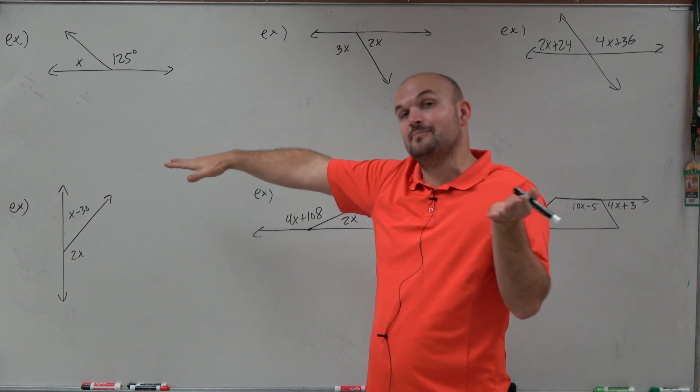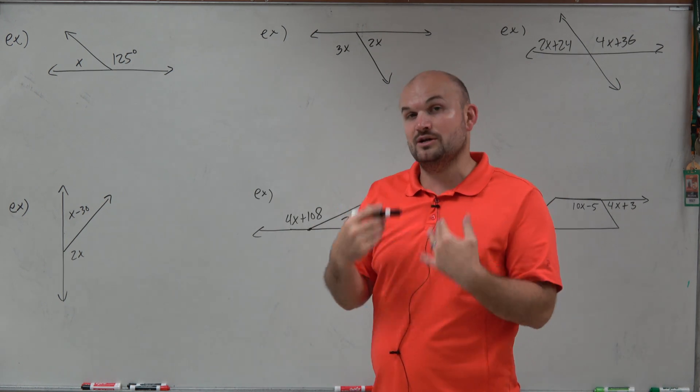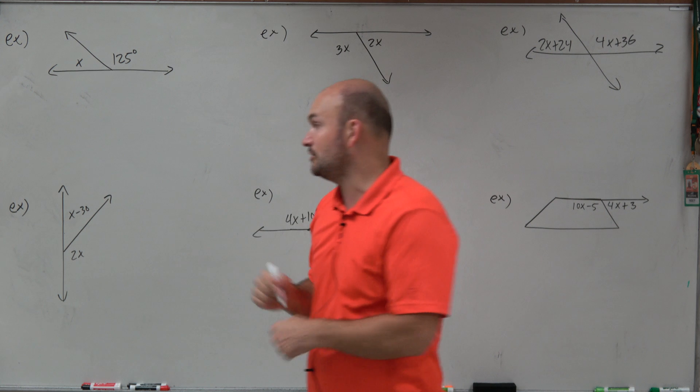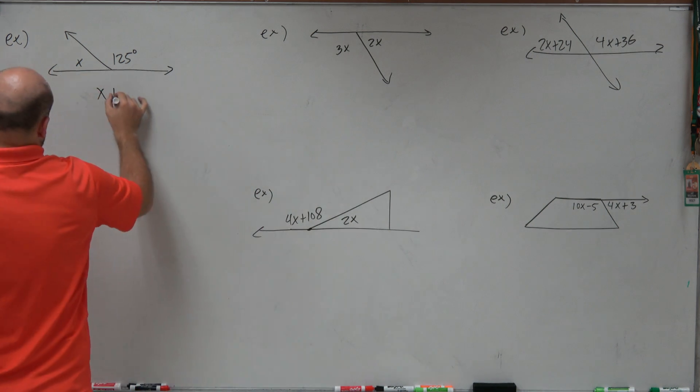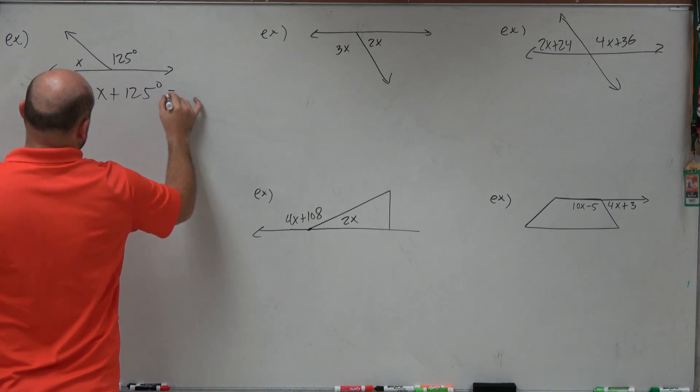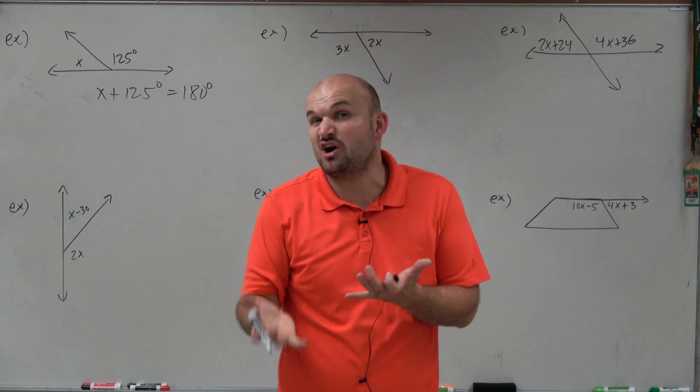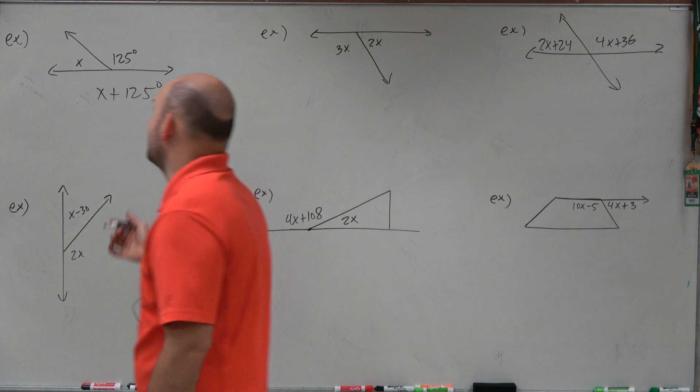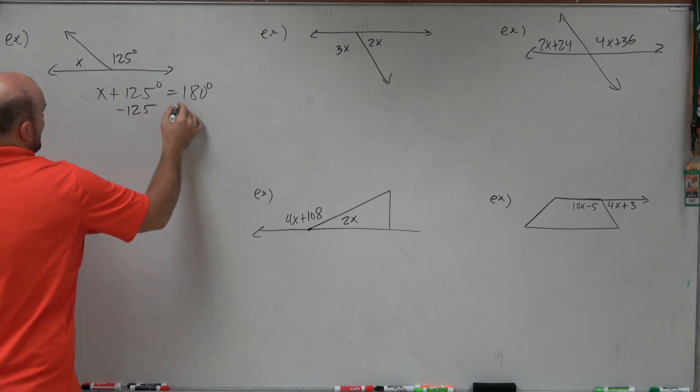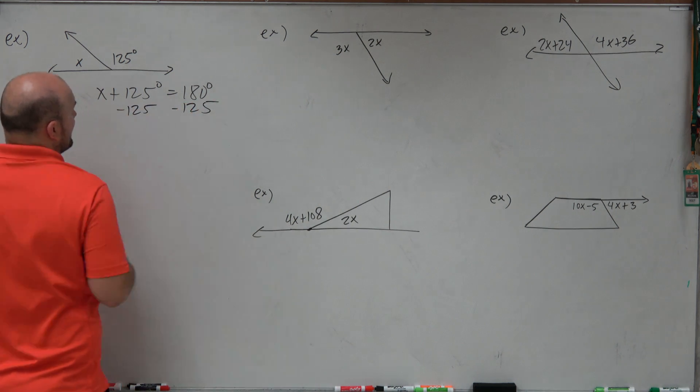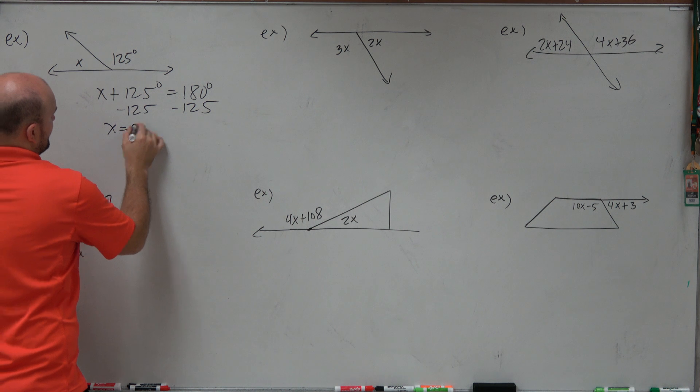And you can see I have x and 125 degrees. Well, those two angles are supplementary because they make up a straight angle. So therefore, we know that the sum of those two angles is equal to 180. So I can say x plus 125 degrees is equal to 180 degrees. Now, all I need to do is solve for x to find my value of x. So I subtract 125 minus 125. And it looks like x is going to equal 55 degrees.